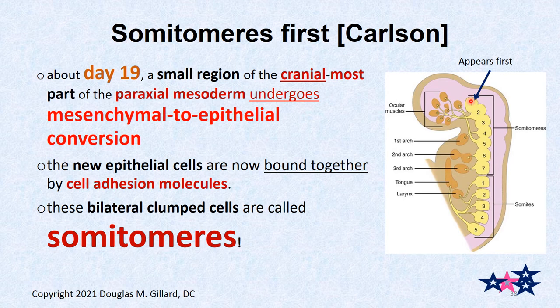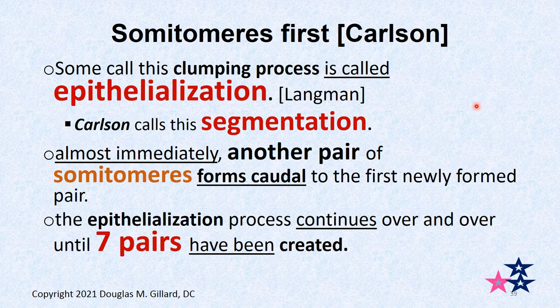To clump, because we have mesenchymal tissue — this is mesoderm — the mesoderm is mesenchymal. So we used to be epithelial, turned it into mesenchymal, and now we're turning it back into epithelial. This is called mesenchymal-to-epithelial conversion. The first somitomeres are born. This process is called epithelialization (what Langman calls it) or segmentation (what most major European authors call it, which makes more sense).